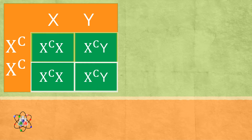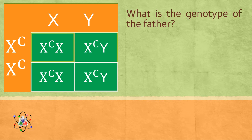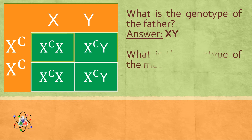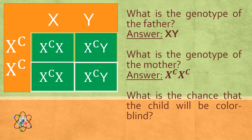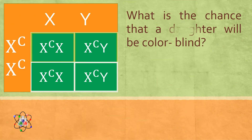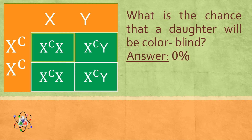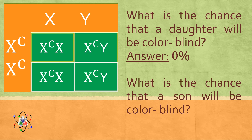Now let us answer these questions. What is the genotype of the father? The genotype of the father is XY. What is the genotype of the mother? The genotype of the mother is XCXC. What is the chance that a child will be colorblind? There is a 50% chance that a child will be colorblind. What is the chance that a daughter will be colorblind? 0% — meaning there is no chance that a daughter will be colorblind, but she will be a carrier of the disorder. What is the chance that a son will be colorblind? There is 100% chance that the son will be colorblind.